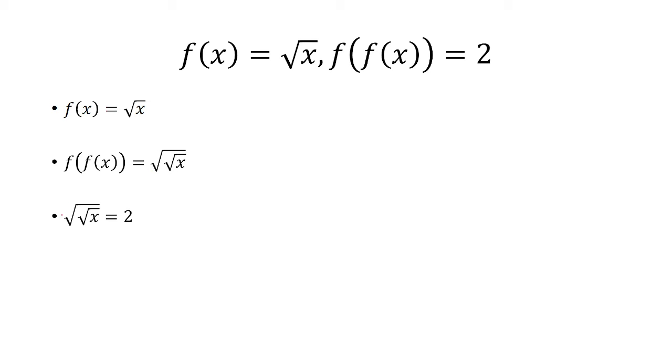This is going to equal 2, and in order to solve for x, we have to undo both square roots. We can do this one at a time if we want, or we can do it all at once.